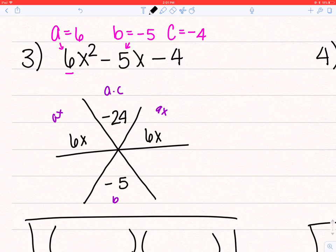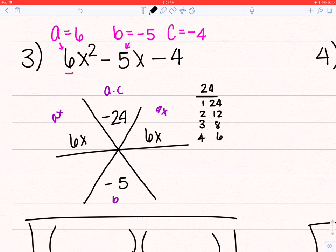Alright, so now I'm looking for my factors of 24. So I always start with 1 and 24, 2 and 12, 3 and 8, 4 and 6, and then they start to repeat. So now I need 2 of those that will give me a difference of 5. So 3 and 8.